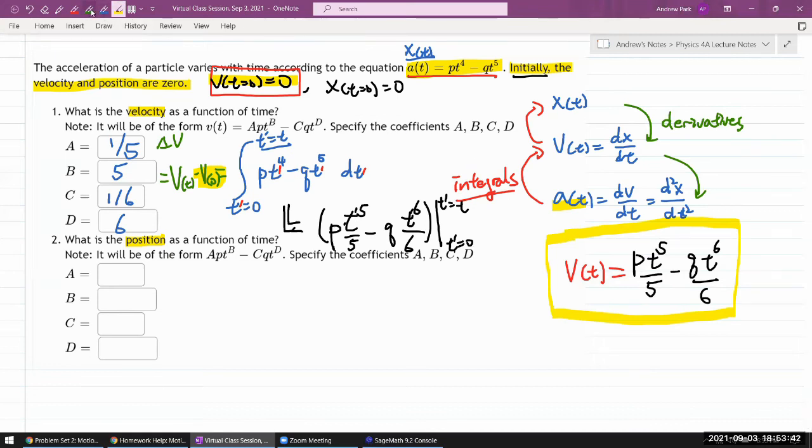So for the position as a function of time, it's the same step. You take the integration, you do the definite integral. So for my technically change of position, it's a difference between position at the final time t minus position at time equals zero. It's going to be equal to integral of this velocity as a function of time.